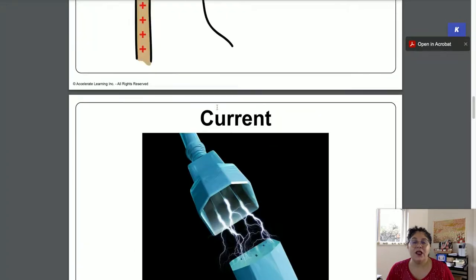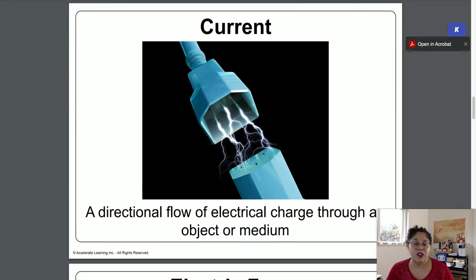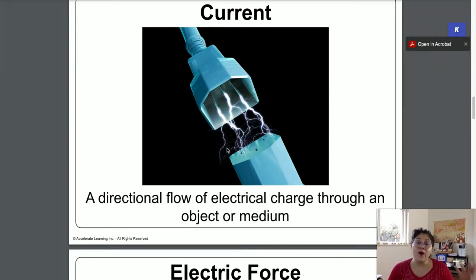A current is a flow, a directional flow of electrical charges. And this is also how you use electricity. So electricity is moved into your phone, your cell phone, using a current. It is how energy is moved from one place to another. These are used through electrons. It is a directional flow of a charge.